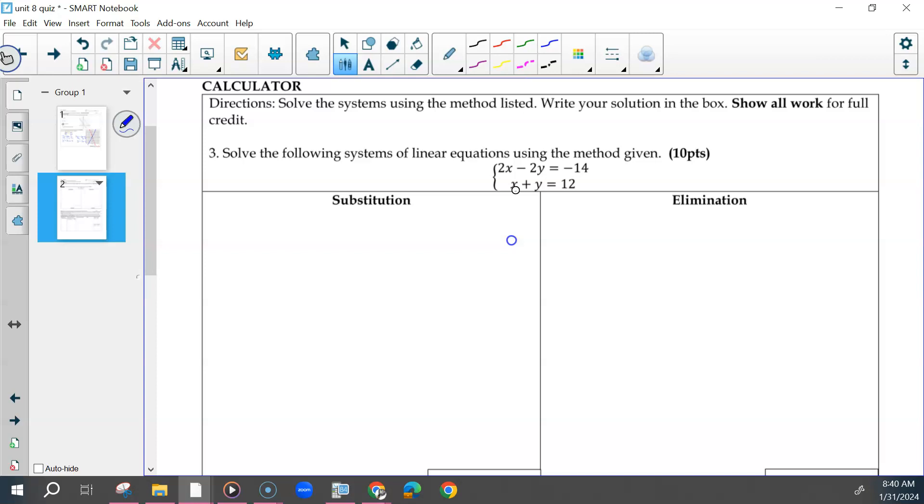I'm going to solve for y in this one. Again, if this is not what you did, don't erase, don't change it. If you want this method, you can write it down. It did not matter whether you put this in slope intercept form or not. And then substitute that into the other one.